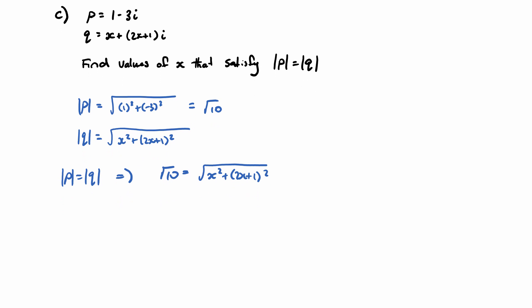Now I'm going to try and solve this for x. So I can square both sides here, and I'm going to get 10 equals x squared plus 2x plus 1 all squared.